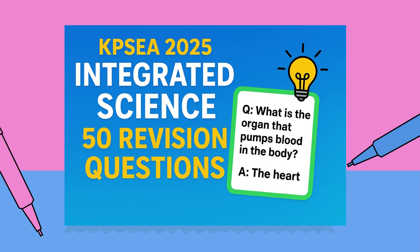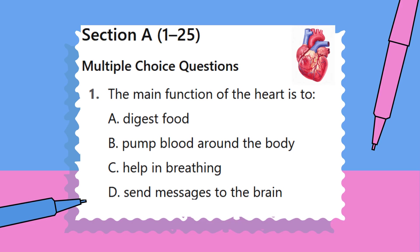KPSCA 2025 Integrated Science Revision Paper, Grade 6. Time: 1 Hour. Instructions: Answer all the questions. Each question carries one mark. Read the questions carefully before answering. Section A: Questions 1–25, Multiple Choice Questions.